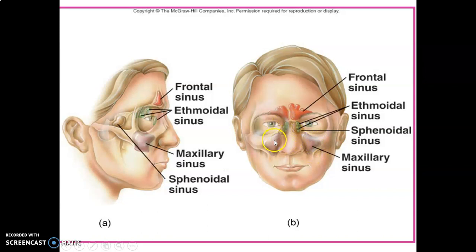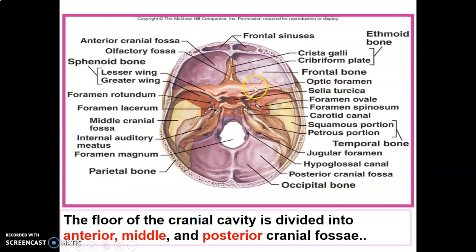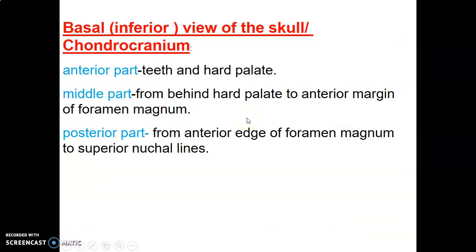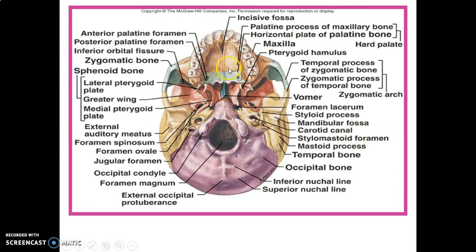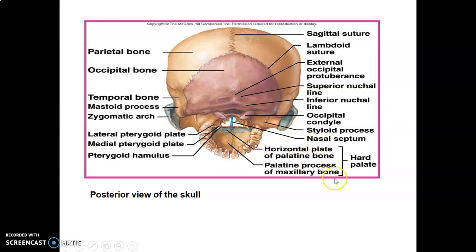The anterior cranial fossa, middle cranial fossa, and posterior cranial fossa are all visible from the internal base of the skull. The middle cranial fossa extends from the lesser wing of the sphenoid anteriorly to the petrous part of the temporal bone posteriorly. The chondrocranium forms the base of the skull, with the anterior part containing the teeth and hard palate, the middle part including the hard palate and anterior margin of the foramen magnum, and the posterior part extending to the superior nuchal lines.